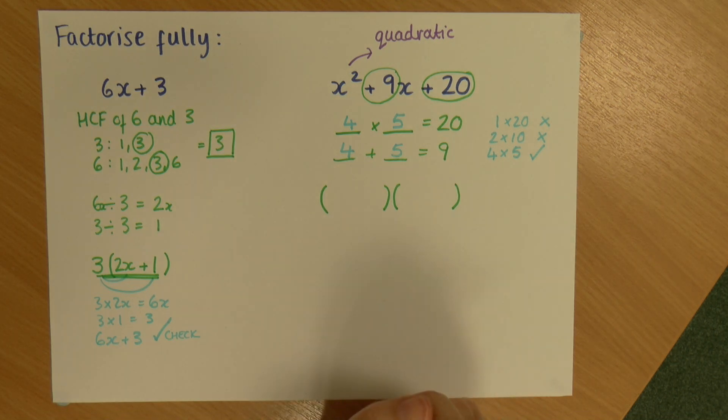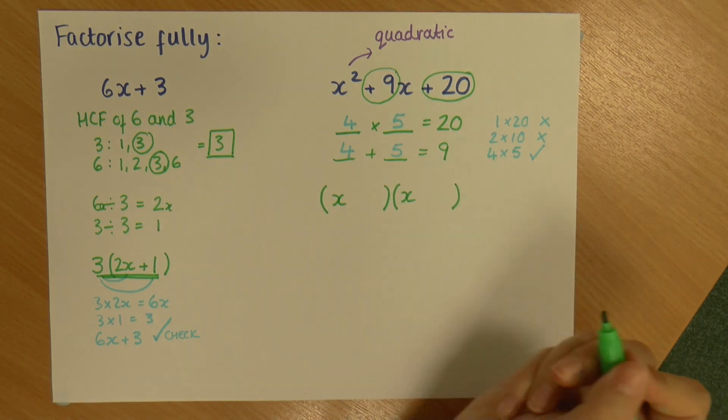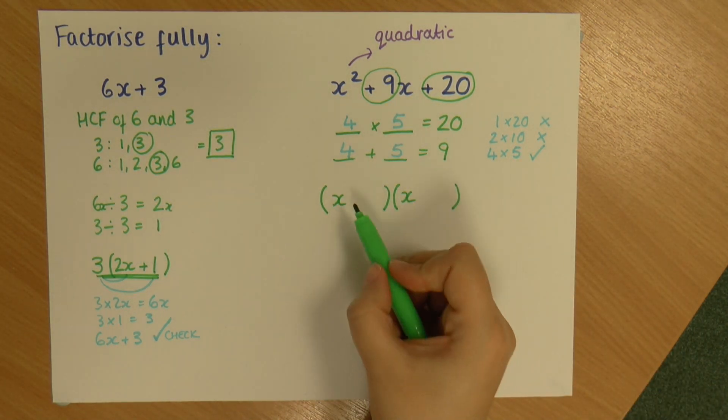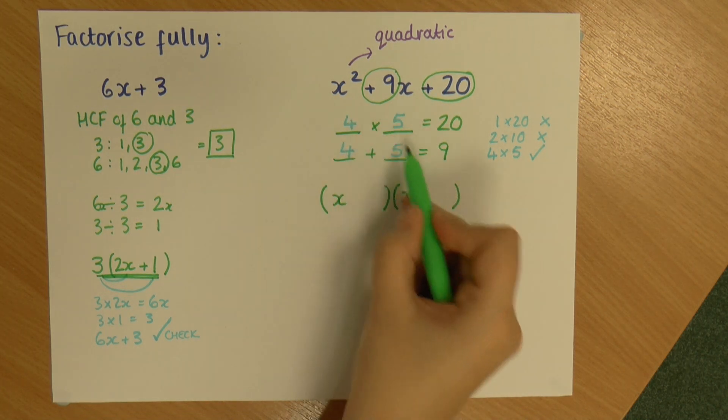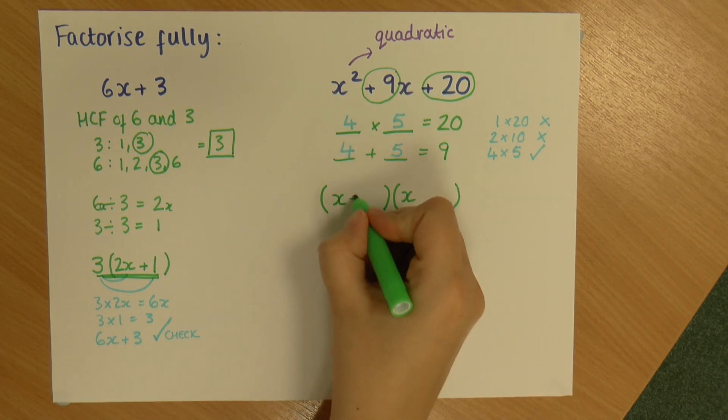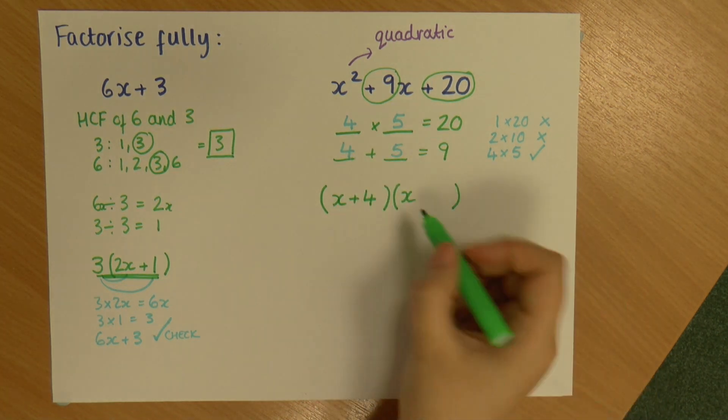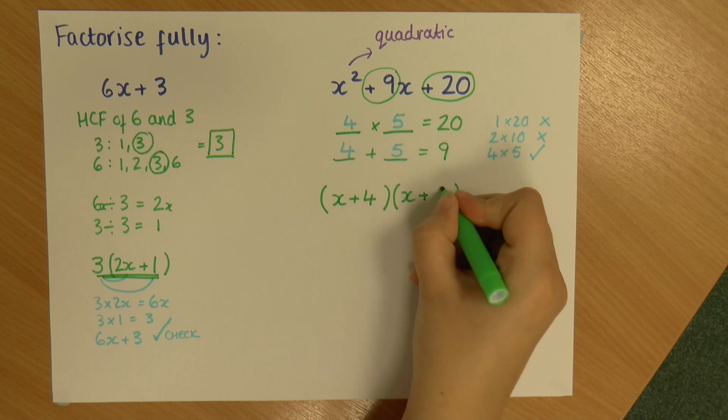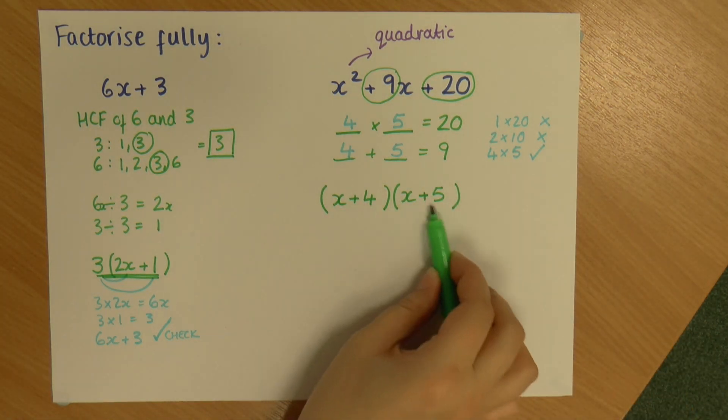So I've got 2 lots of brackets and the format looks a bit like this. So in my first bracket I've got an x and I put one of these numbers in. It doesn't matter which. So I've got my x plus 4 because it's a positive 4. And in my second bracket I've got an x plus 5. So I'm just filling in those numbers.